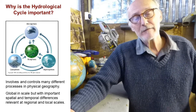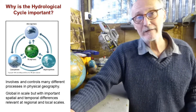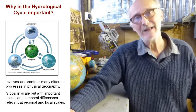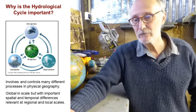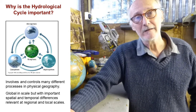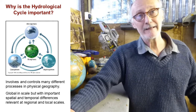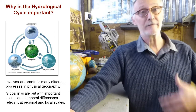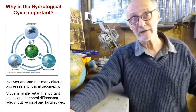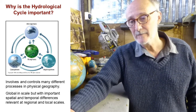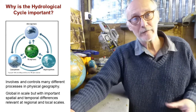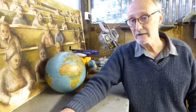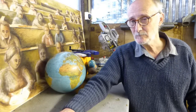This brings us to think about lots of different processes going on in physical geography. A lot of the other parts of physical geography you've been thinking about during this module connect with the hydrological cycle. This is another example of something which is global in scale — a global hydrological system, a global hydrological cycle. But it's relevant also at regional and very local scales, where you can see things going on locally which connect to this big global system.